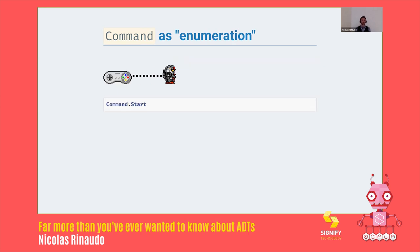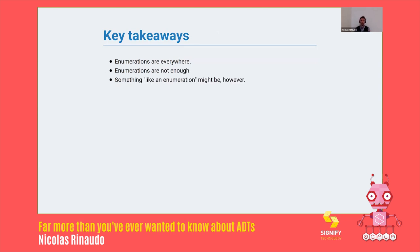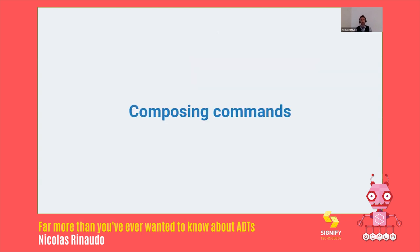And now this obviously doesn't compile anymore, but command.start does. What have we learned? Enumerations are everywhere. The first problem we encountered in that modelling, we had to reach for enumerations. They're not quite enough, so we had to tweak them slightly. But something very much like an enumeration might be enough, and this is what we're going to explore by trying to compose commands together.